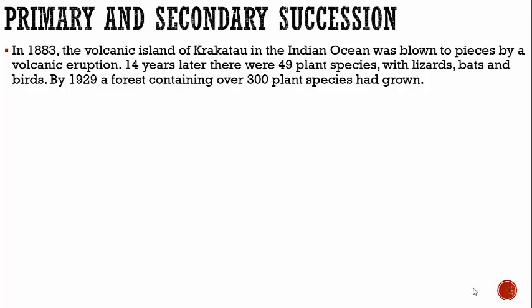14 years later, there were 49 different plant species, lizards, bats, and birds. So we have this island that was literally blown to pieces and destroyed, and then just in 14 years you have plants, lizards, bats, and birds showing up. By 1929, a forest containing over 300 plant species had grown.